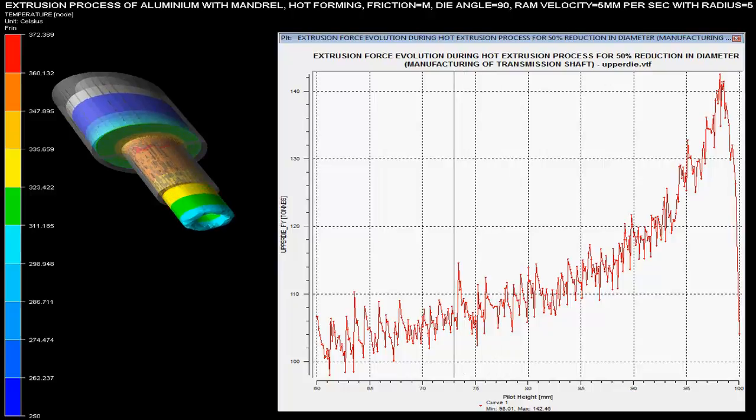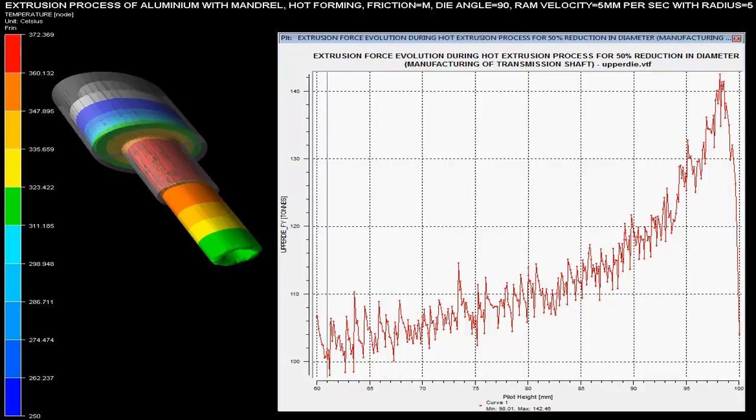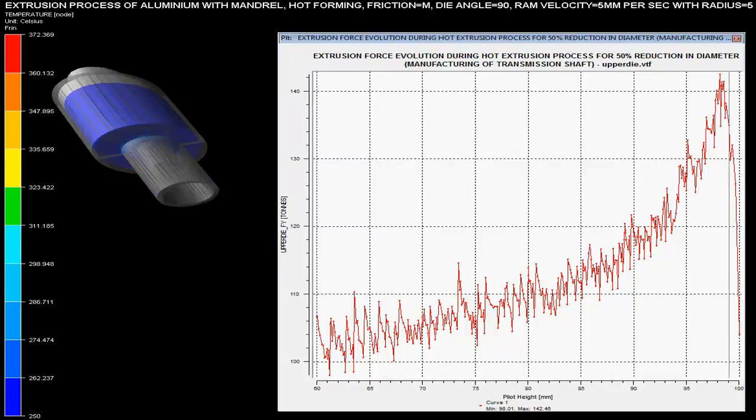Ram velocity is set as 5 mm per second with a radius of 5 mm. The die angle is specified as 90 degrees and it is specified that there is medium friction during this cold extrusion process.